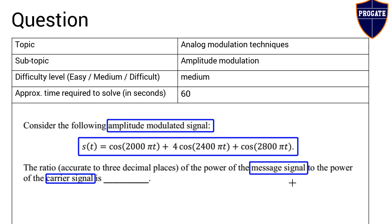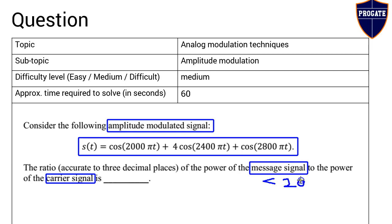In AM radio, the message signal is around 3.5 kilohertz. Any signal a human can hear through their ears is in the range of 20 Hz to 20 kHz — this is called the message signal. Music signals, speech signals, and voice signals whose frequency is less than 20 kHz are called message signals and contain the actual information to be transmitted.